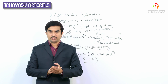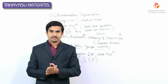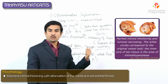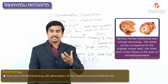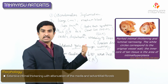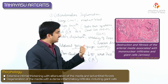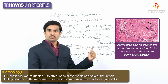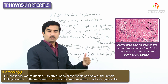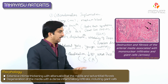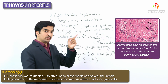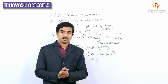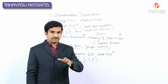Regarding morphology: the gross specimen shows extensive intimal thickening with attenuation of the media and adventitial fibrosis. Microscopically, Takayasu arteritis shows degeneration of the media with a dense inflammatory infiltrate including the presence of giant cells, similar to giant cell arteritis.